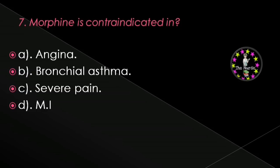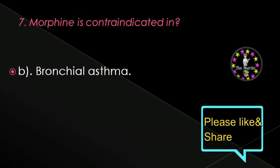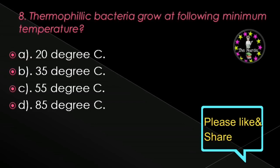Next question: Morphine is contraindicated in — angina, bronchial asthma, severe pain, or myocardial infarction? Correct answer is bronchial asthma.